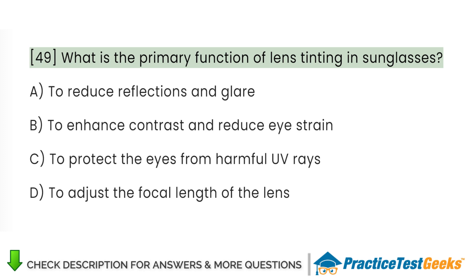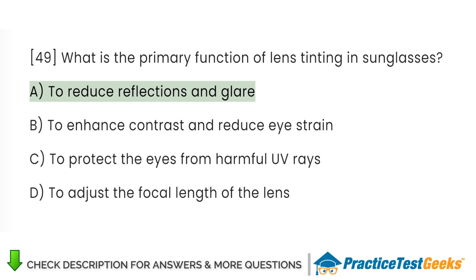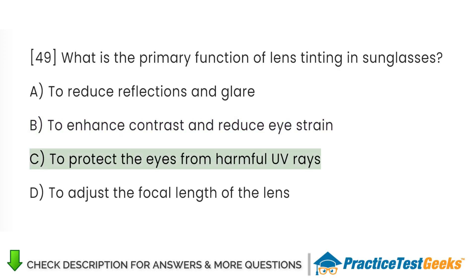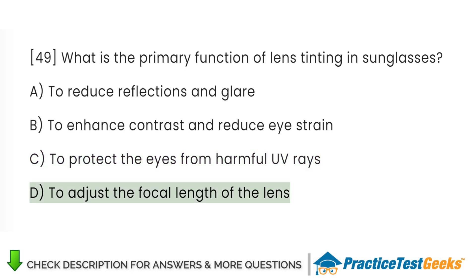What is the primary function of lens tinting in sunglasses? A. To reduce reflections and glare. B. To enhance contrast and reduce eye strain. C. To protect the eyes from harmful UV rays. D. To adjust the focal length of the lens.